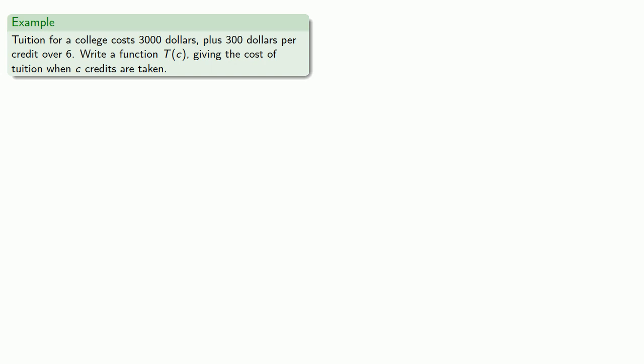Or let's consider tuition. Tuition for a college costs $3,000 plus $300 per credit over 6. So write a function T(c) giving the cost of tuition when c credits are taken. And here we might notice that the formula changes when you go over 6 credits, so there's going to be two rules. A rule when the number of credits is less than or equal to 6, and a rule when the number of credits is greater than 6.